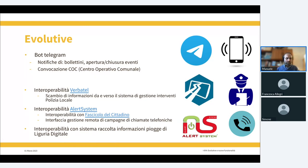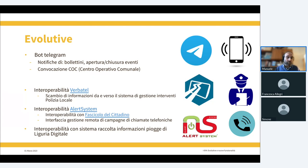Il primo elemento evolutivo è il bot Telegram, già citato nella scorsa puntata, che ha permesso l'arrivo di notifiche di bollettini e di apertura e chiusura degli eventi ai soggetti coinvolti. Sono due bot Telegram: uno dedicato a tutti i soggetti coinvolti nella soluzione delle emergenze, e uno in particolare alle persone coinvolte nel COC, il Centro Operativo Comunale, convocato all'inizio di un'emergenza per l'organizzazione delle soluzioni.